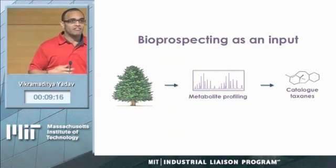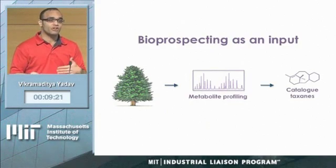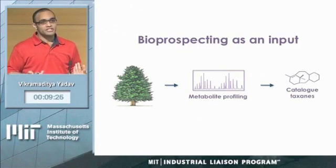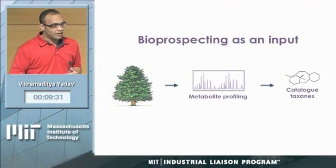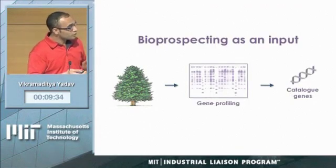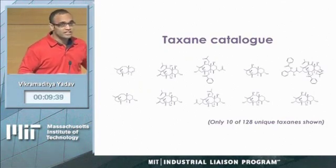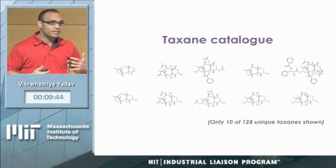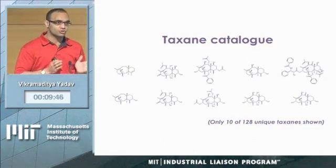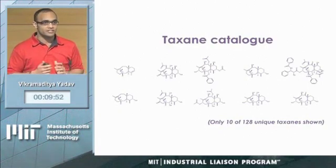Going back and reevaluating the problem, I realized there is a lot of data available from fermentation — a lot of metabolite structures and gene data available. So instead of taking a bottom-up approach, we took a top-down approach. We went back to the Reaccess database, got the structures of all possible taxanes, curated that list from a single source, and ended up with a list of about 128 unique taxanes naturally synthesized.